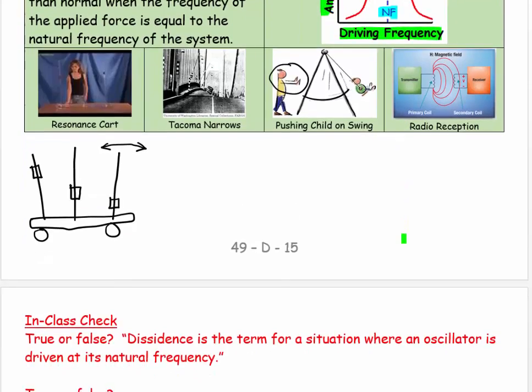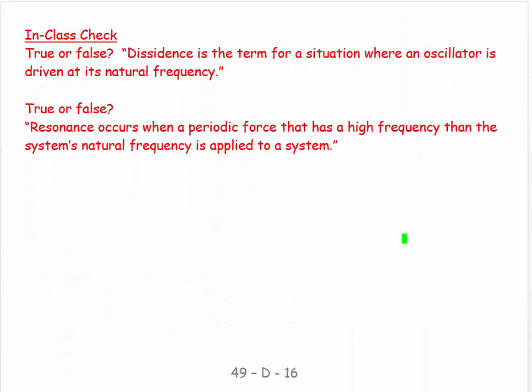This is really a very useful concept. We'll come back to this later in the course. For the moment, true or false: 'Dissidence is the term used for a situation where an oscillator is driven at its natural frequency.' That's false - it's resonance, not dissidence.